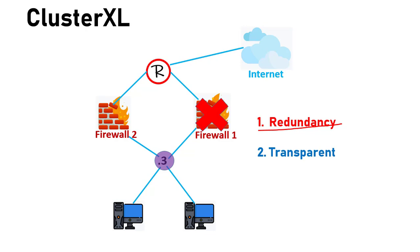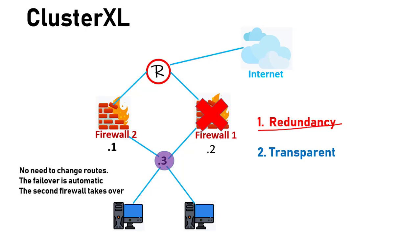Let's say you have a virtual IP address — we're going to discuss it in more detail later. You have a virtual IP, so you don't need to change routes. The failover is automatic and the second firewall takes over without any need to change routes on your router or on the client machine. This is how Checkpoint defines a cluster. Your solution has to be transparent to the client, to the router, to everybody. It has to be redundant and transparent.